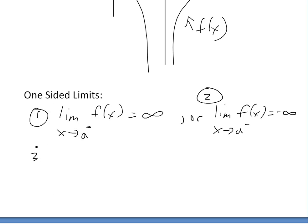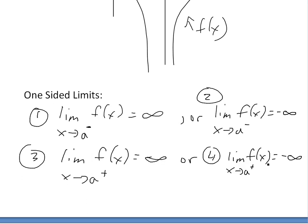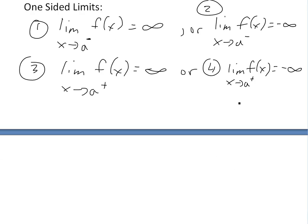We could also have case three and four, where it's the same thing now, except x approaches a from the right side, or the positive side of a, and this equals infinity. Or again, we'll write the exact same thing here now, except negative infinity.